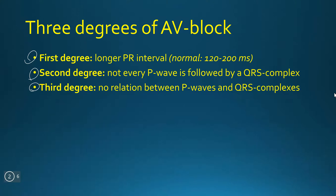In first degree AV block, your PR interval becomes longer — that is the interval between the P wave and the R top. Normally, it's not longer than 200 milliseconds. If it's longer than 200 milliseconds, or five small squares on EKG, you have a first degree AV block.